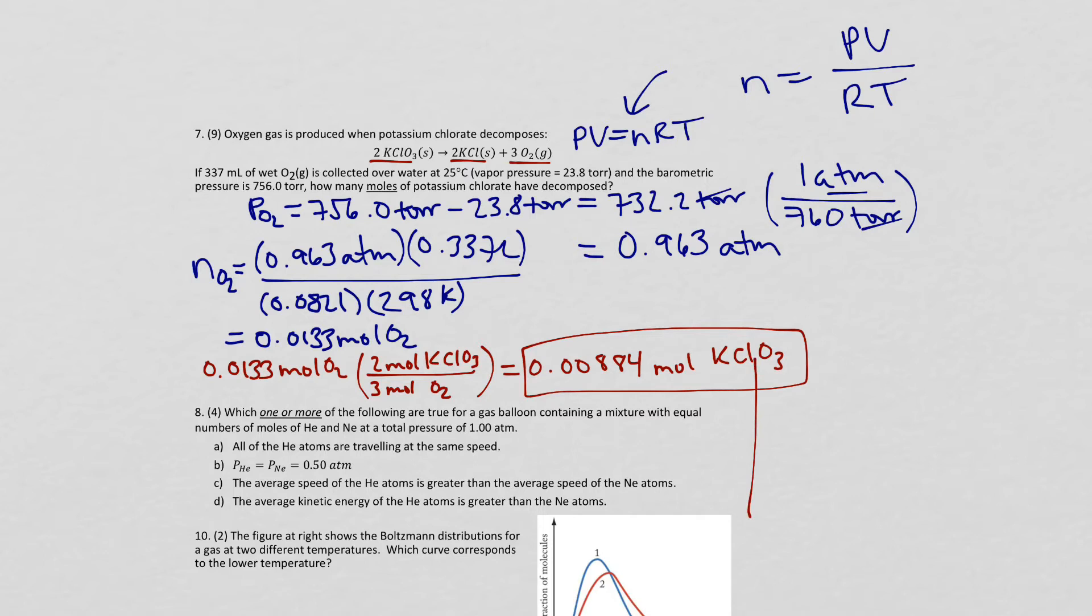So when we come out here, we're actually going to do this part of the problem over here. We're going to take our 0.0133 moles of O2. We're going to multiply that by 3 moles of O2 and 2 moles of KClO3 on top. And then we can do our multiplication and get 0.00884 moles of KClO3. And we did that just by using our stoichiometric coefficients and plugging them into the problem.